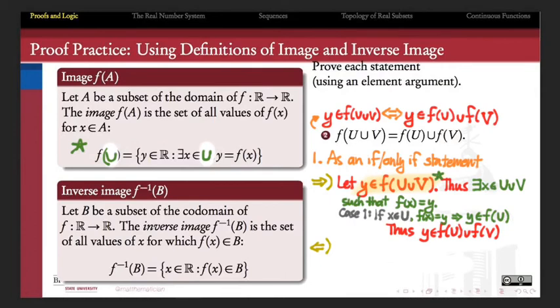And if Y belongs to F of U, what does it also belong to necessarily? Where are we trying to get to? Yeah, it belongs to the union. F of U, union F of V. So in case one, we have now shown that Y belongs to F of U, union F of V.